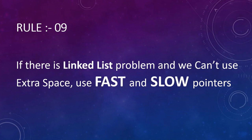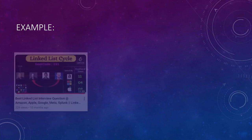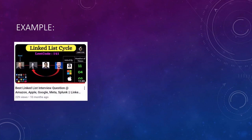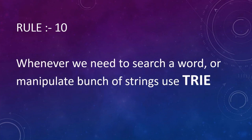Rule number nine: whenever we are dealing with a linked list problem and told we cannot use any extra space, use two pointers — one fast pointer and one slow pointer — both starting at the beginning. The fast pointer does two jumps at a time while the slow pointer does one jump, allowing you to reach a solution efficiently without using extra space. A great example is detecting a cycle inside a linked list.